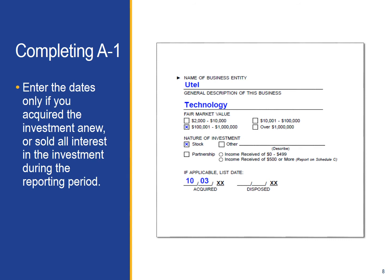The last section asking for acquired and disposed dates does not apply to all filers. You need only complete it if you sold the entire investment or if you bought it anew during the reporting period. If this applies to you, you must provide the date or dates that you bought and/or sold the investment. Please note that you do not report dates if you sold some shares of an investment or bought more shares of an investment that you already held.